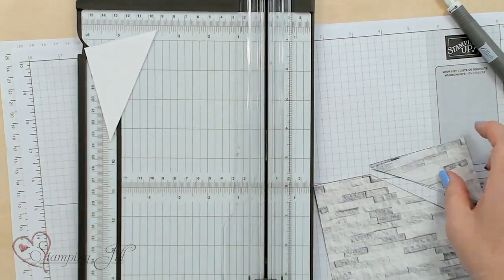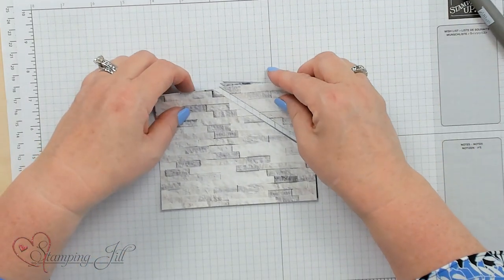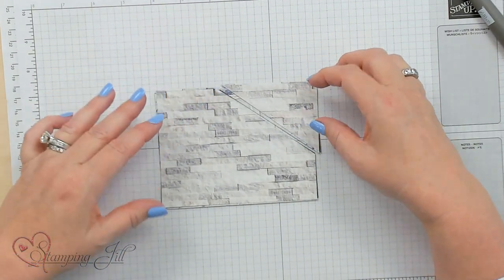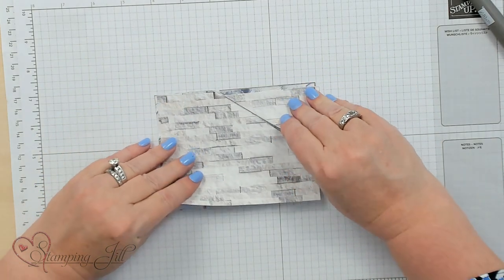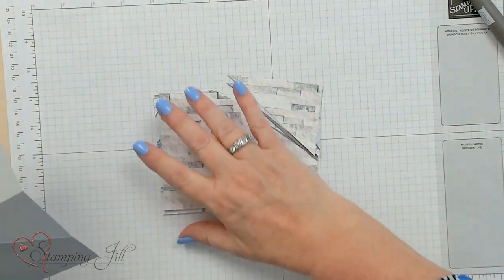Now that five and three eighths piece and four and an eighth piece, this will be the front and that will be the inside. Let me show you how to put that together.